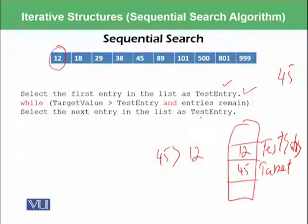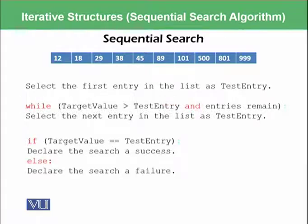This is the procedure we will be working, and within this procedure we will further check whether target value is equal to test entry or not. So whether 12 is equal to 45 or not. If it is not equal then we will fetch next 18 in place of 12.